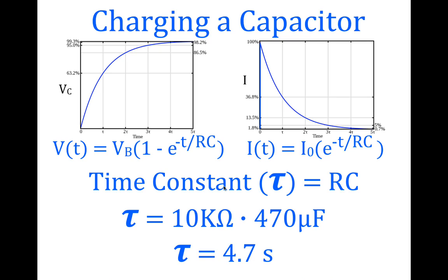The time constant tells us how long it takes for the capacitor to charge. If we want to change the time it takes for the capacitor to charge, we usually change the resistor.